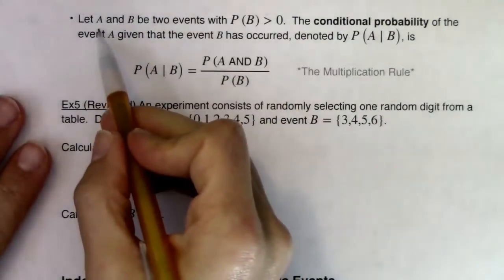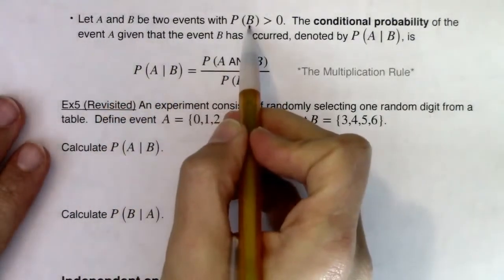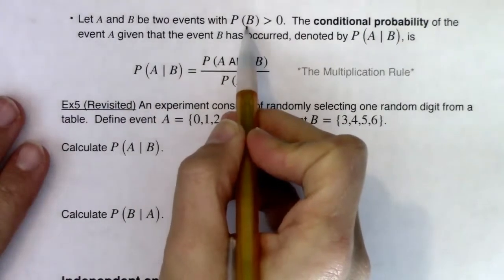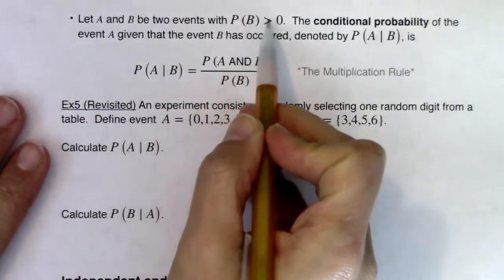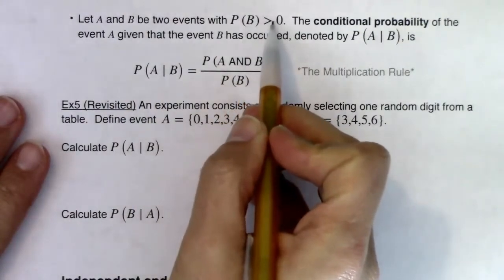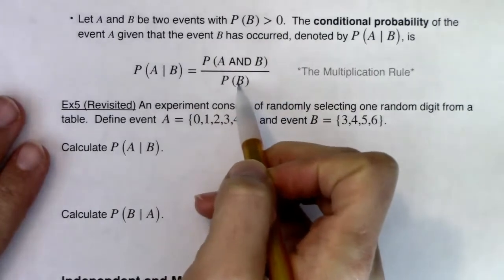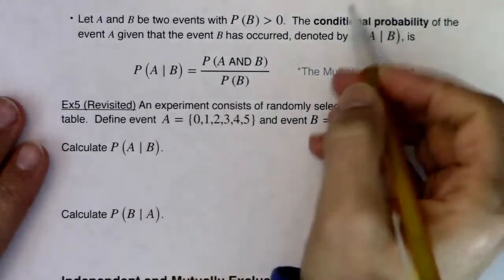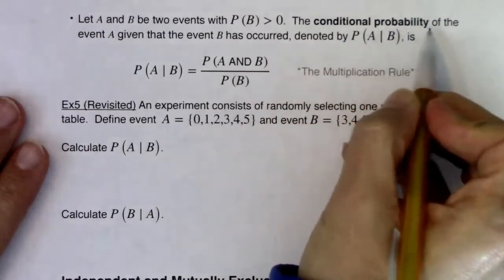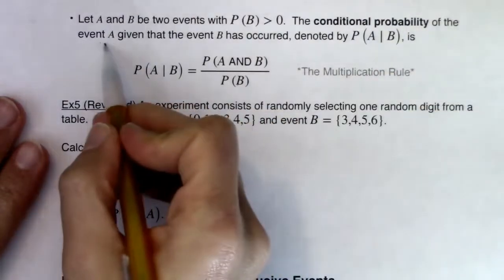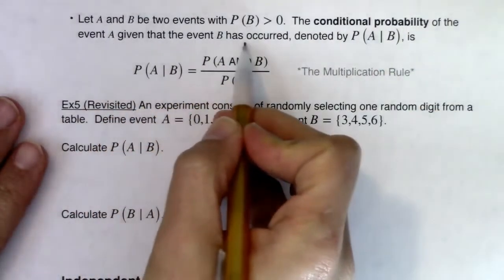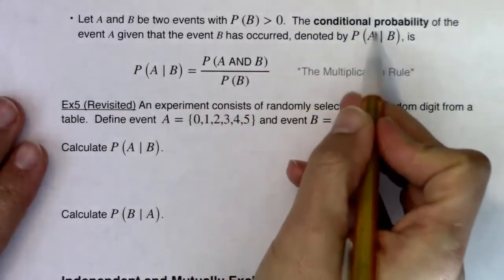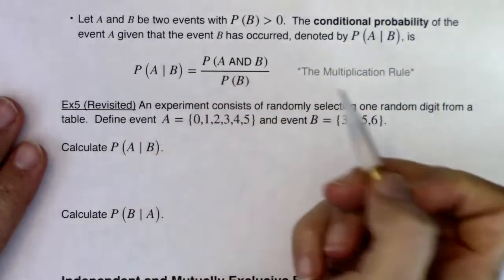Let A and B be two events where the probability of B is strictly greater than zero — specifically, the probability of B is not allowed to equal zero exactly, because it's going to be in a denominator and you can't divide by zero in math. So the conditional probability of event A, given that event B has occurred, denoted by P(A|B), is this formula.